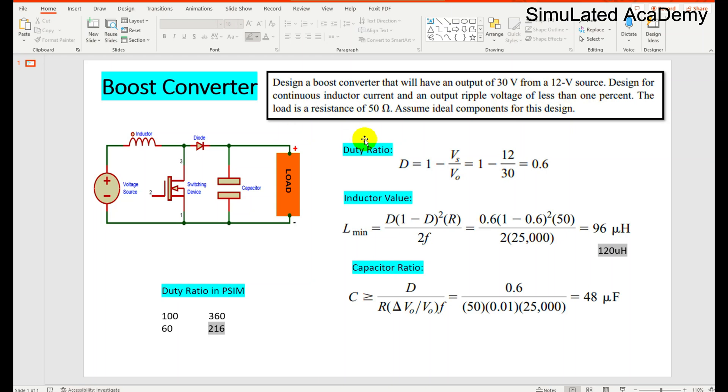First, let's calculate the duty ratio. Duty ratio is calculated by D equals 1 minus Vs divided by V0. So D turns out to be 0.6 or 60%.